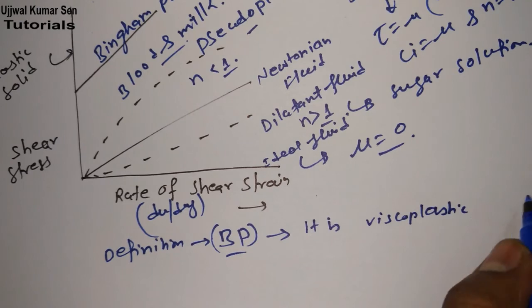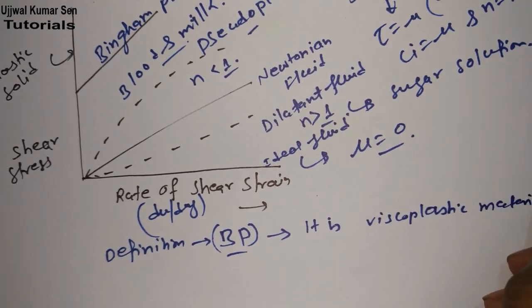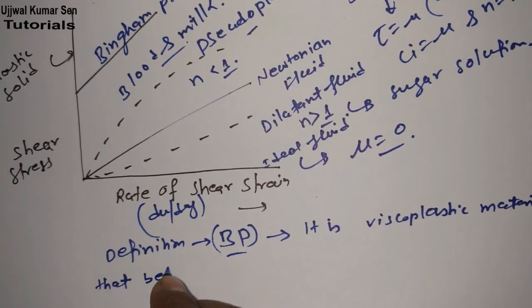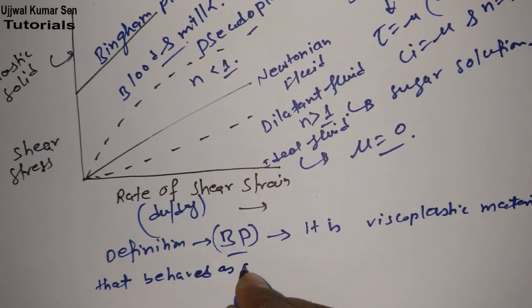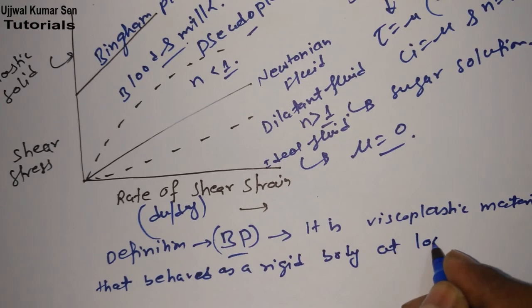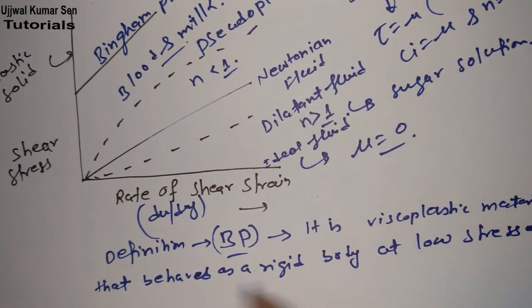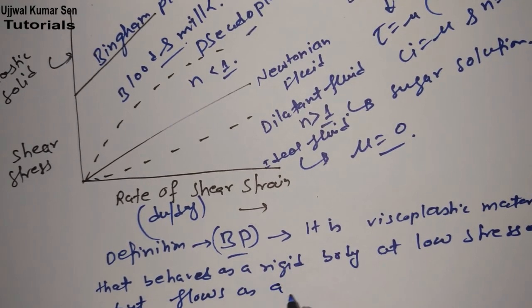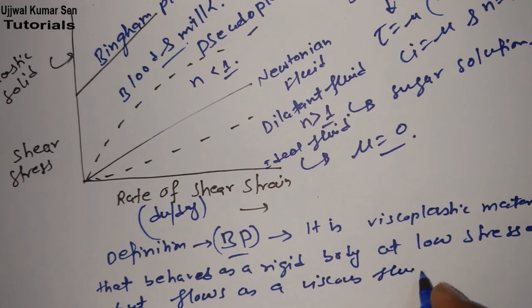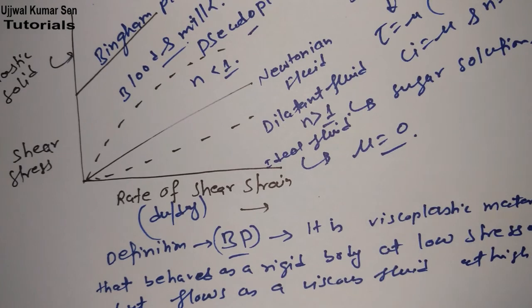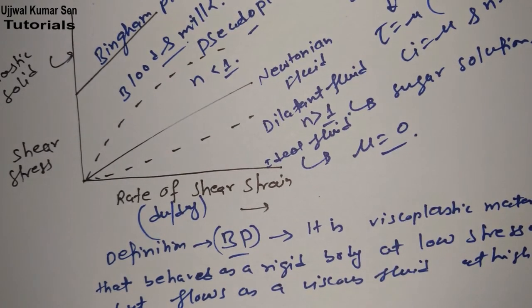What is the definition? It is a viscoplastic material that behaves as a rigid body at low stresses but flows as a viscous fluid at high stress. So this is the definition of Bingham plastic fluid.